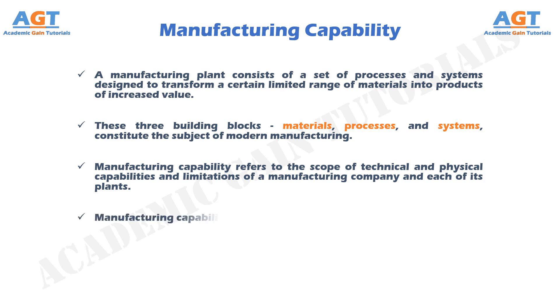Manufacturing capability has three dimensions: 1. Technological process and capability; 2. Physical size and weight of product; and 3. Production capacity.